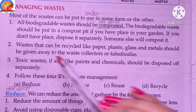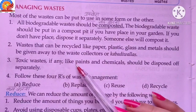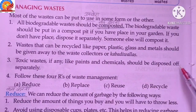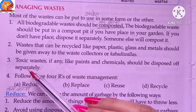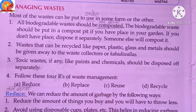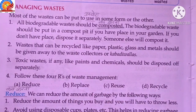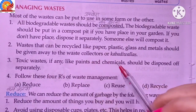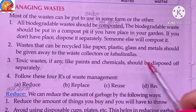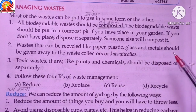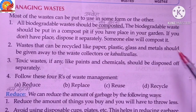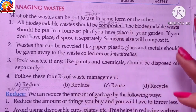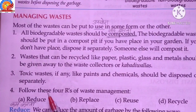Point third: toxic waste — such as paints and chemicals — should be disposed of separately. Such hazardous materials require a different method of disposal; they must be dealt with apart from regular waste.